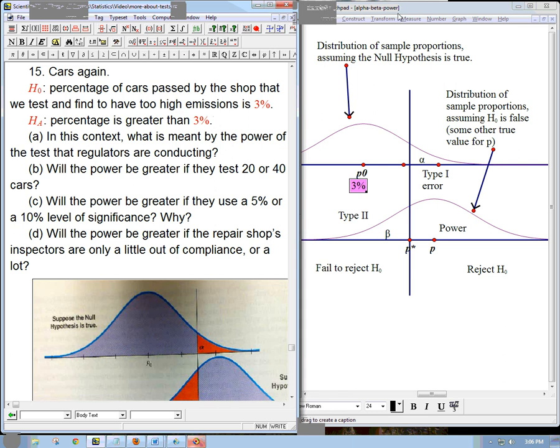So now on this picture, what we expect, if we assume the null hypothesis, we expect that we're going to see, when we test 10, 20, 40, 100 cars, we're going to see some proportion of inappropriate passing from the emissions place that's centered on 3%. Maybe we'll see a little high because we accidentally see more bad cars. Maybe it's a little low because we accidentally see fewer bad cars.